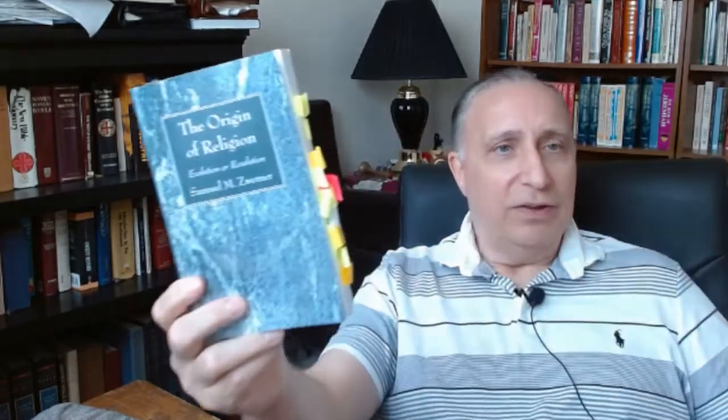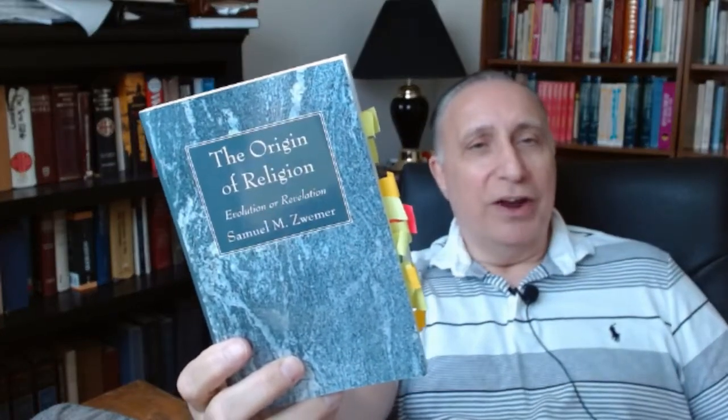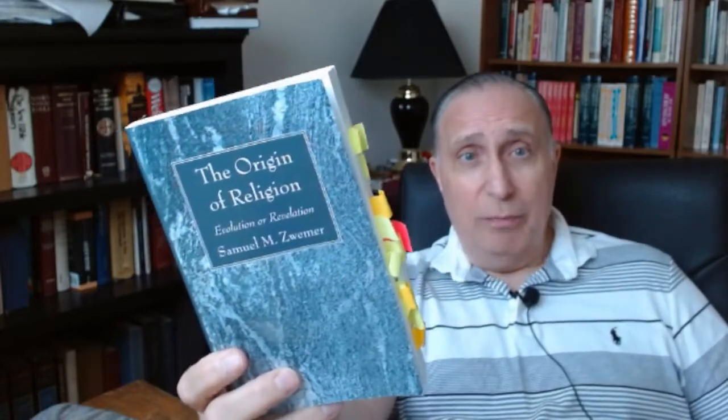And you find that in other many primitive cultures, too. Another work which I came across is Samuel Zwemer, the great missionary to the Arab lands, primarily. And The Origin of Religion, Evolution of Revelation. This also deals with original monotheism and the evidence there.